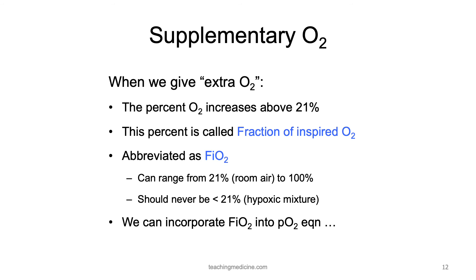As you know, some patients are provided with extra oxygen. When this occurs, the percentage of oxygen increases above 21%. The percentage of oxygen that is inhaled is called the fraction of inspired oxygen, abbreviated as FiO2. The FiO2 can range anywhere between 21% and 100%. The FiO2 should never be below 21%, and if this were to occur because of some malfunction of equipment, then we would be delivering a hypoxic mixture of gas to the patient.